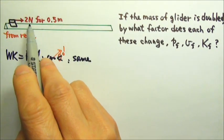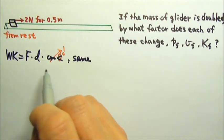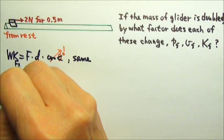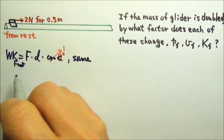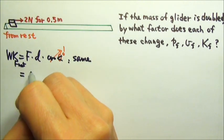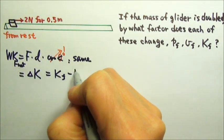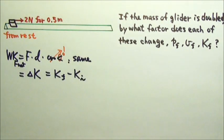And this 2N force is the net force on this glider. Therefore, this is the work done by the net force. And what is the work done by the net force? It is the changing kinetic energy, which is the final kinetic energy minus the initial kinetic energy.